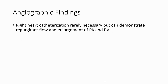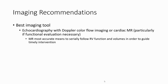Angiographic findings: right heart catheterization is rarely necessary but can demonstrate retrograde contrast flow and enlargement of the pulmonary artery and right ventricle. Imaging recommendation: the best imaging tool is echocardiography with Doppler color flow imaging for cardiac assessment.